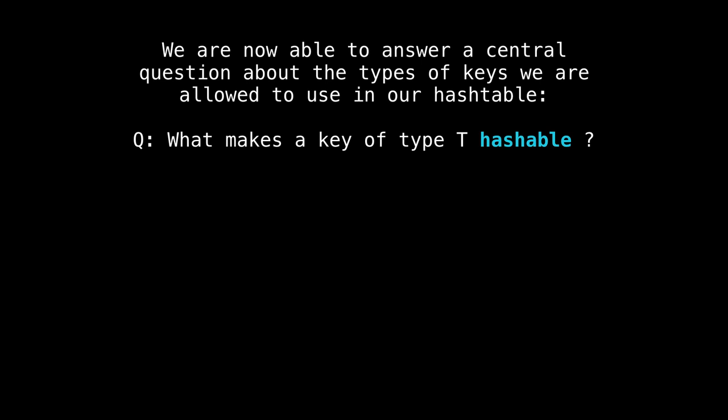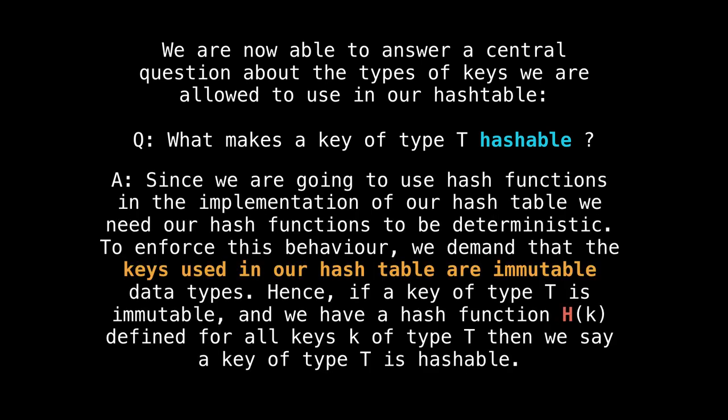Okay, so now we're able to answer a central question about the types of keys that we're allowed to put in our hash table. So what makes a key of type T hashable? Here's the answer. Since we're going to implement our hash table using these hash functions, we need those hash functions to be deterministic. And to enforce that behavior, you'll see a lot of programming languages enforce that the keys you use be immutable, meaning you can't change them, they're fixed, they're constants. So they're things like immutable strings, integers, but not things like sets or lists or things you can add or remove things from, they're immutable. And if we have that condition, and we have a hash function that is defined for all keys of type T, then we say that that type is hashable.